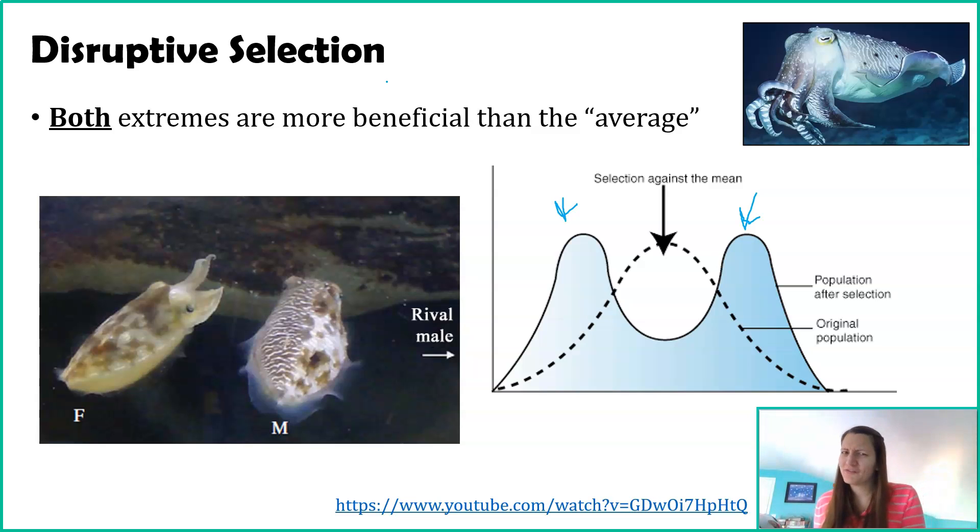But I said cuttlefish were an example of disruptive. So how are the small ones doing? Not only is there a different base coloration in females, but there is also a size difference where females are smaller than the males, which is pretty typical in the animal kingdom. The really small males are actually about the size of females.